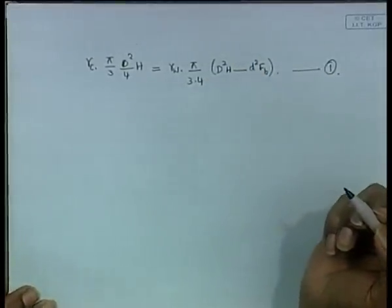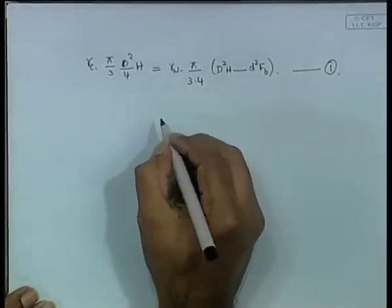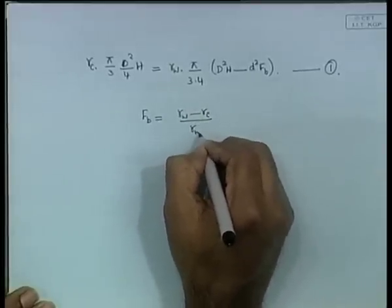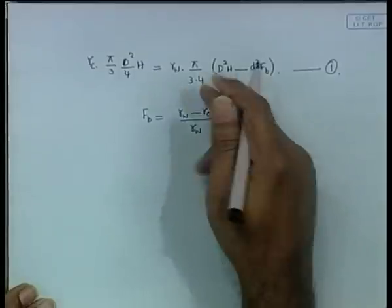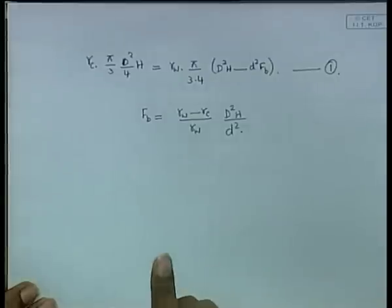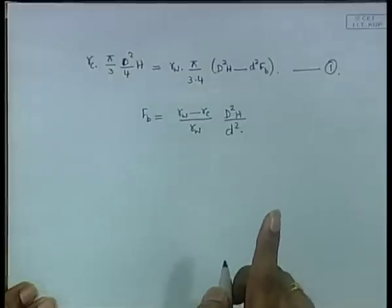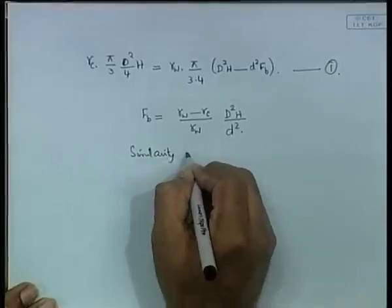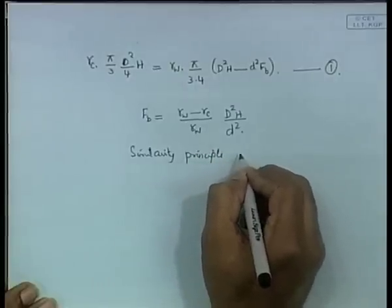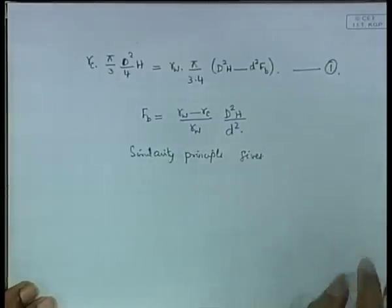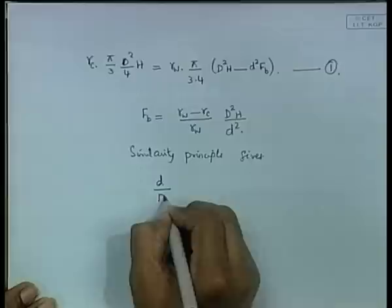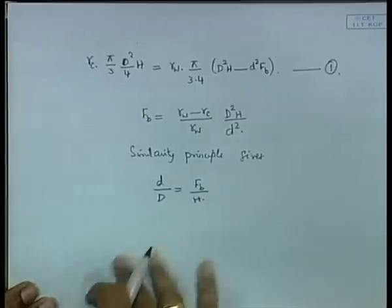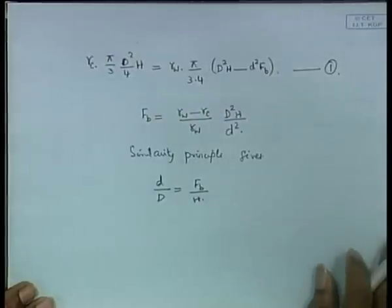You have in a way completed about one third of the problem. From this you get FB equals ((gamma_w minus gamma_c) / gamma_w) times (d²/D²) × H. This comes from manipulation of the equation above. Then applying the similarity principle - both the full cone and the small cone represent the same apex angle - you get d/D equals FB/H.